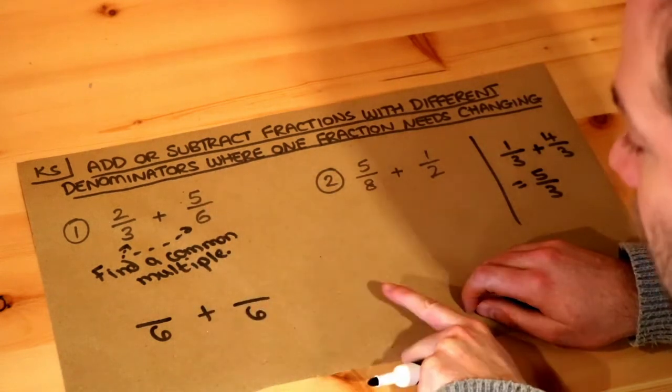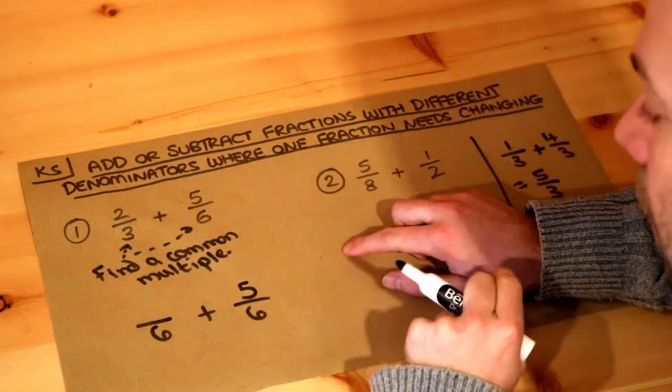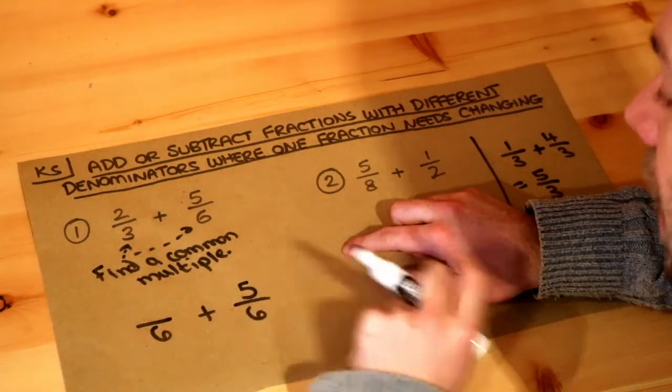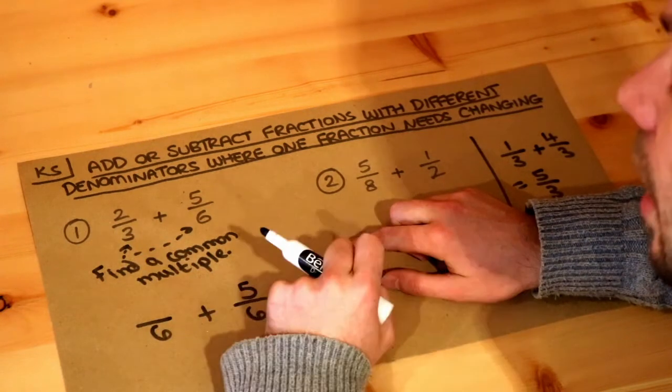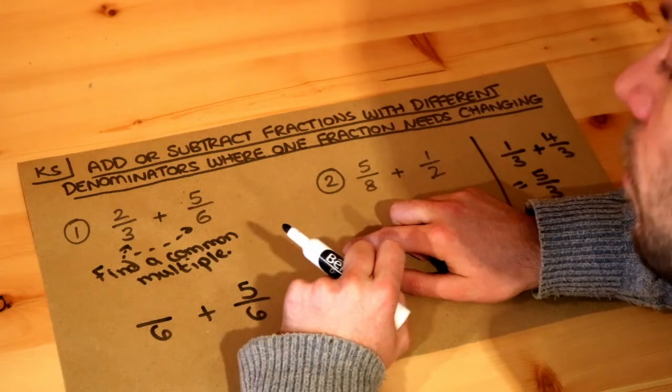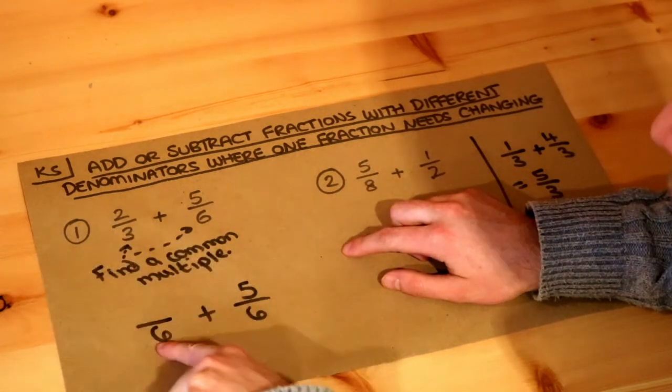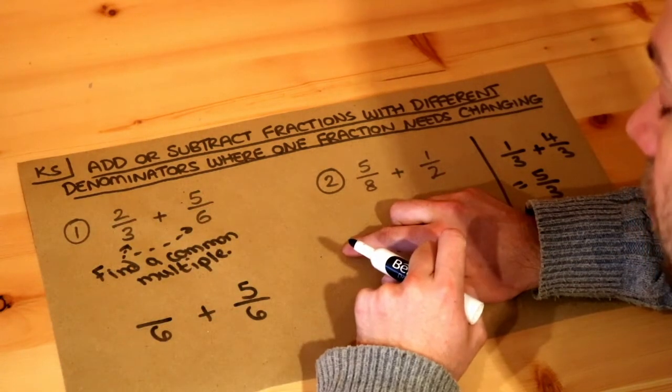So we're going to do these both over six because both three and six go into six. Now this fraction hasn't changed at all, so we can just copy the five here. The five sixths stays as five sixths, but this fraction has changed. The three has become a six. Now we saw in a previous video about equivalent fractions and basically whatever you multiply or divide the bottom of the fraction, the denominator by, you have to do the same to the numerator, the top of the fraction.